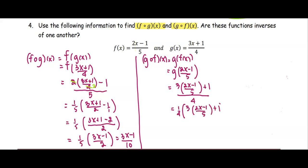I'm going to simplify inside the parentheses to find a common denominator. We get 1 over 4 times 3 times 2x minus 1 plus 5, all divided by 5. Next, simplify to be...